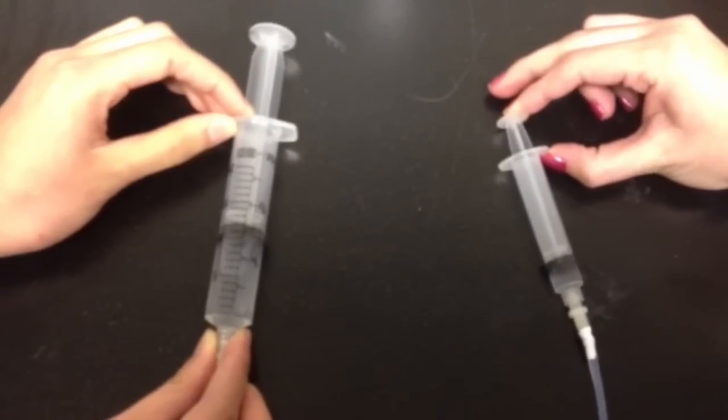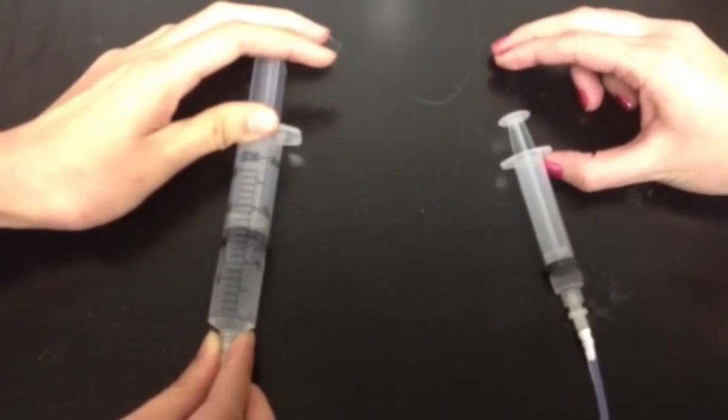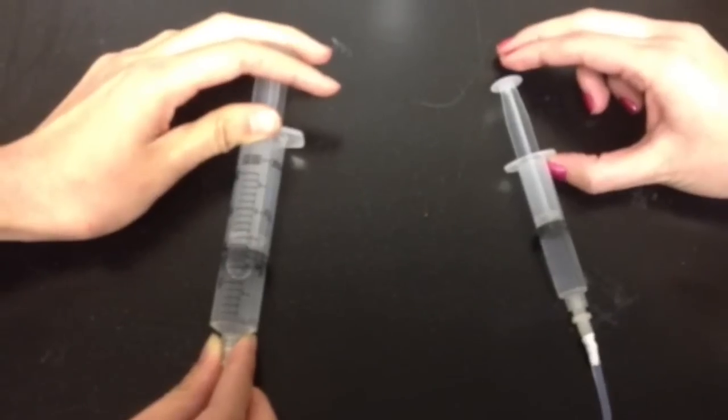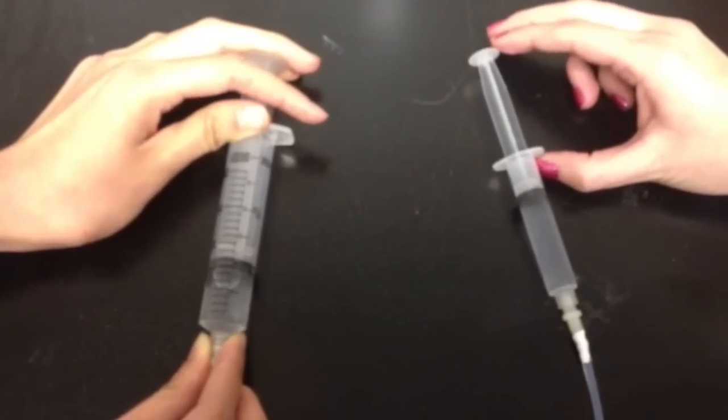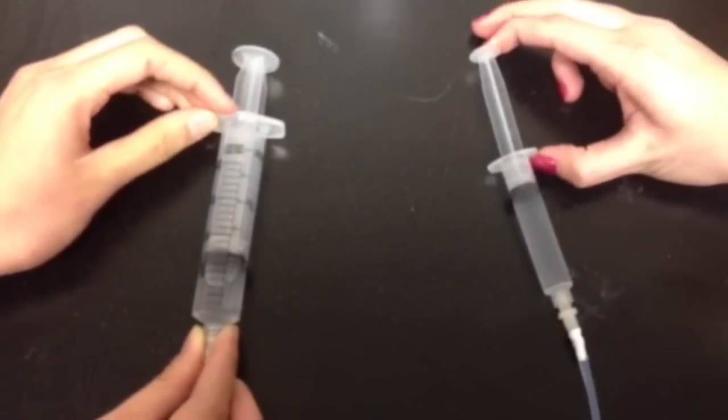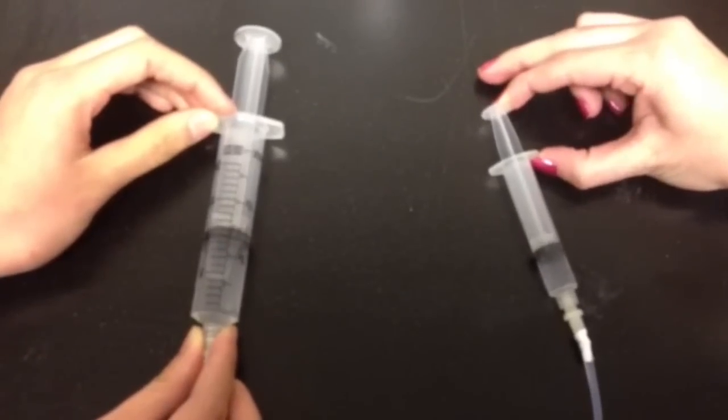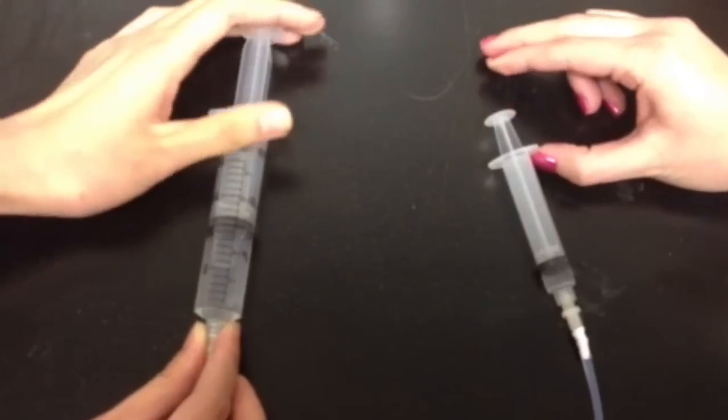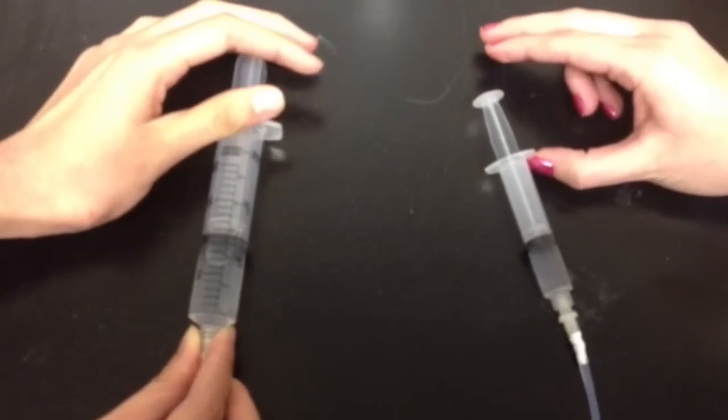We also know that pressure equals force divided by area, so mathematically, each pressure can be replaced by its respective force over its area. The smaller syringe has a much smaller area, therefore it requires less force to achieve the same pressure.